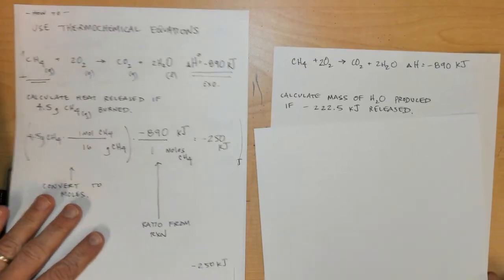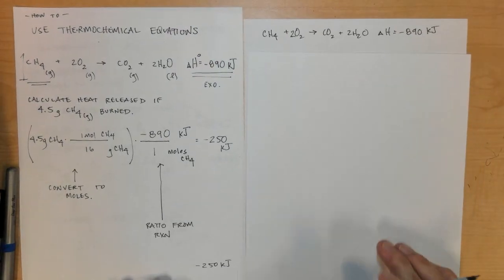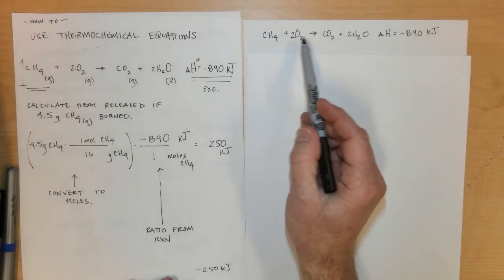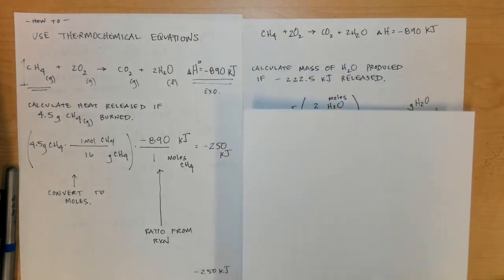Lastly, let's take a look at this reaction in reverse. Let's take this same reaction that I have written down, but this time let's say that we're given that negative 222.5 kilojoules were released.